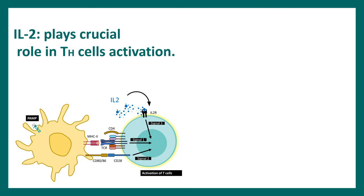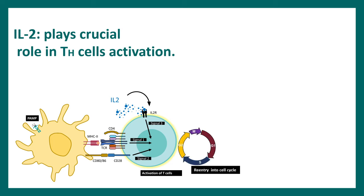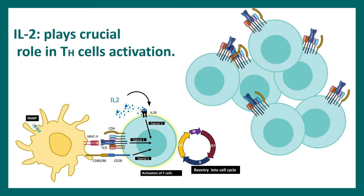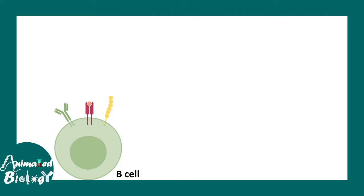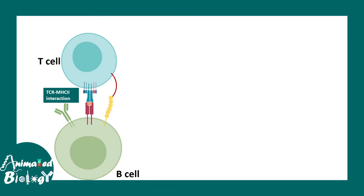IL2 plays an important role in T helper cell activation, which requires three signals. Signal one is MHC-bound peptide versus TCR interaction. Signal two is CD80 and CD28 interaction. Signal three is an autocrine signal — IL2 secreted by T cells acts on their own IL2 receptor, completing activation and driving the cell to re-enter the cell cycle and proliferate.